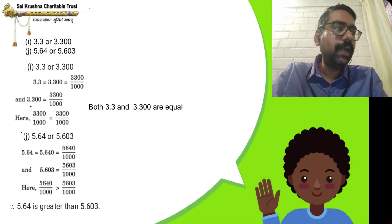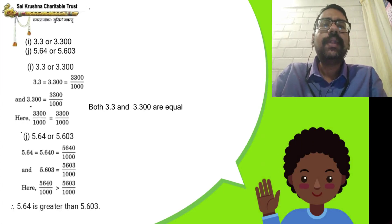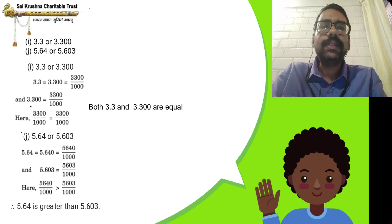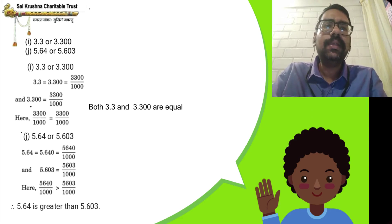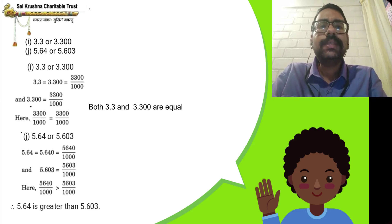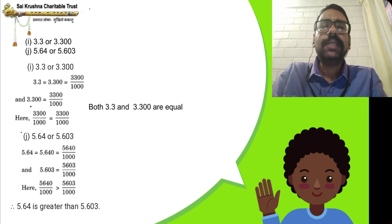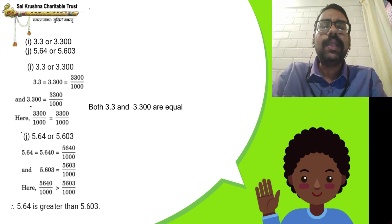Which is greater, 3.3 or 3.300? Comparing the whole number part: 3 and 3 are the same. Note that writing zeros to the right of a decimal number does not change its value, so 3.3 and 3.300 are the same. Therefore 3.3 and 3.300 are equal.